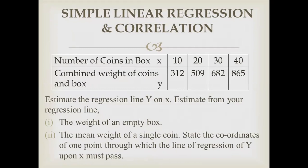The values are: 10, 20, 30, 40 coins with weights 312, 509, 682, 865. Estimate the regression line Y on X. Estimate from your regression line: the weight of an empty box, and the mean weight of a single coin.